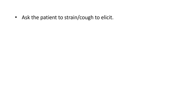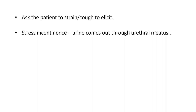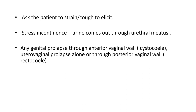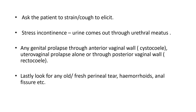Ask the patient to strain or cough to elicit stress urinary incontinence — on coughing, urine comes out through the urethral meatus. Any genital prolapse through the anterior vaginal wall can be seen in cases of cystocele; uterovaginal prolapse through the vagina; and through the posterior vaginal wall you can appreciate enterocele and rectocele. Lastly, look for any old or fresh perineal tears, hemorrhoids, anal fissure, etc.